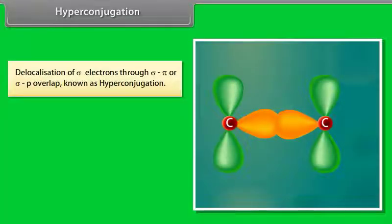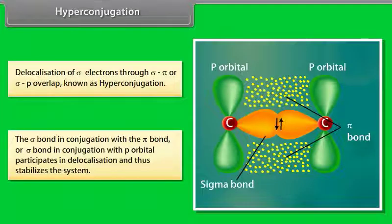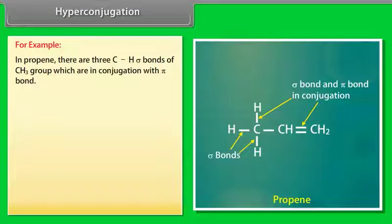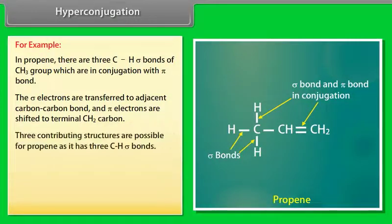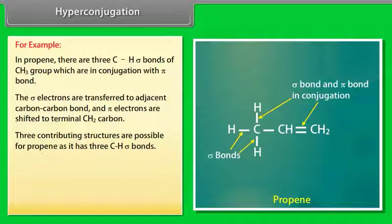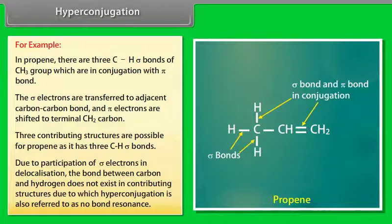Hyperconjugation — delocalization of sigma electrons through sigma-pi or sigma-p overlap is known as hyperconjugation. The sigma bond in conjugation with the pi bond or with a p orbital participates in delocalization and thus stabilizes the system. For example, in propene, there are three C-H sigma bonds of the CH3 group which are in conjugation with the pi bond. The sigma electrons are transferred to the adjacent C-C bond and pi electrons are shifted to the terminal CH2 carbon. Three contributing structures are possible for propene. Due to participation of sigma electrons in delocalization, the bond between carbon and hydrogen does not exist in contributing structures, which is why hyperconjugation is also referred to as no-bond resonance.